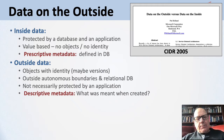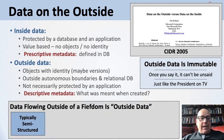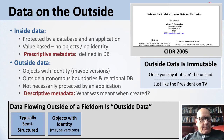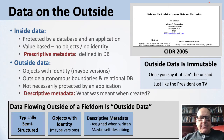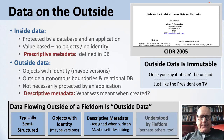Outside data is immutable. Once you say it, it can't be unsaid — just like the president on TV. Data flowing outside of a fiefdom is outside data. It is typically semi-structured, not relational — objects with identity and maybe versions. It has descriptive metadata: the description of the shape and form of the data happens at the time the data is written. It may be self-describing or point to another description, but it is describing, not prescribing the shape. It is understood by the fiefdom and probably understood by outsiders because that's important if it's flowing back and forth.